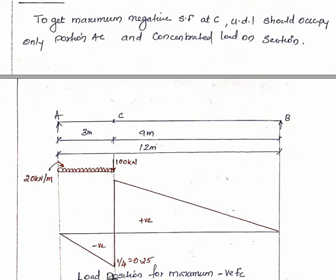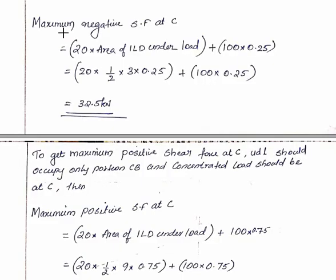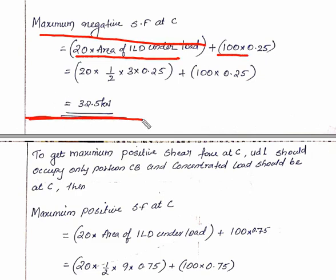Calculating maximum negative shear force at C: 20 times area of ILD under load plus 100 times 0.25. The maximum negative shear force equals 32.5 kN. Now calculate the maximum positive shear force.